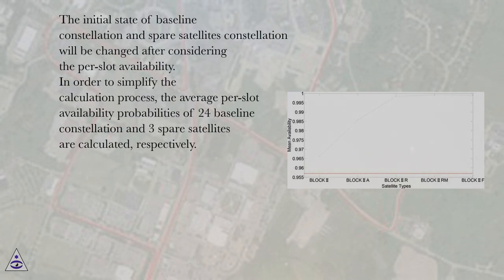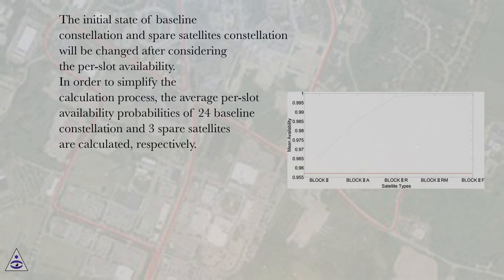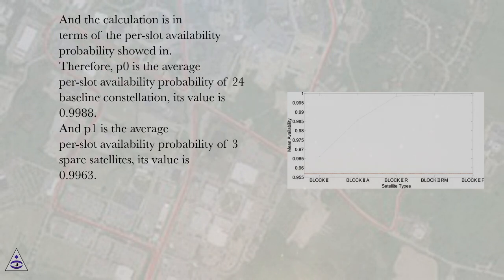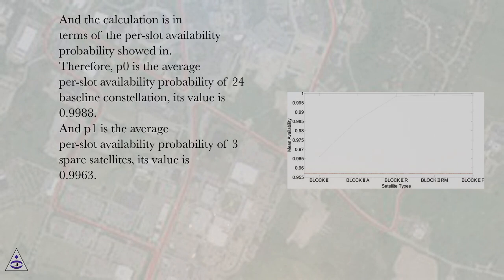The initial state of baseline constellation and spare satellites constellation will be changed after considering the per-slot availability. To simplify the calculation process, the average per-slot availability probabilities of 24 baseline constellation satellites and 3 spare satellites are calculated respectively. P0 is the average per-slot availability probability of 24 baseline constellation satellites, with a value of 0.9988. P1 is the average per-slot availability probability of 3 spare satellites, with a value of 0.9963.